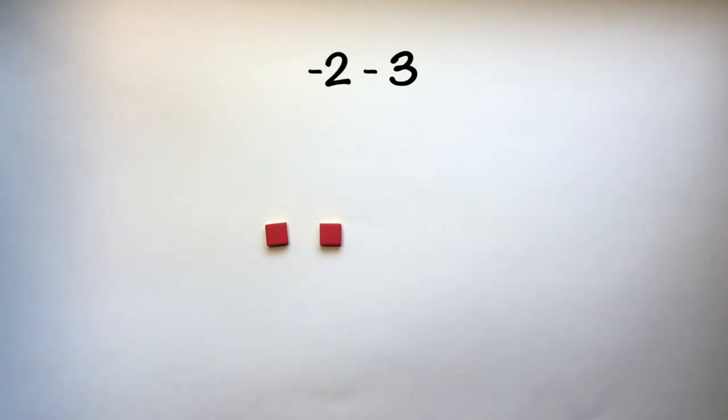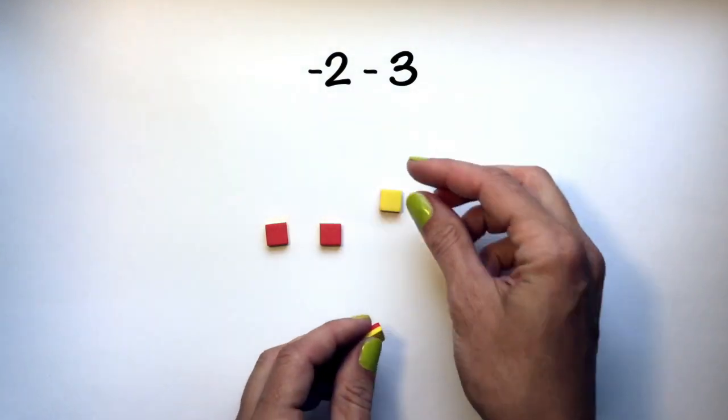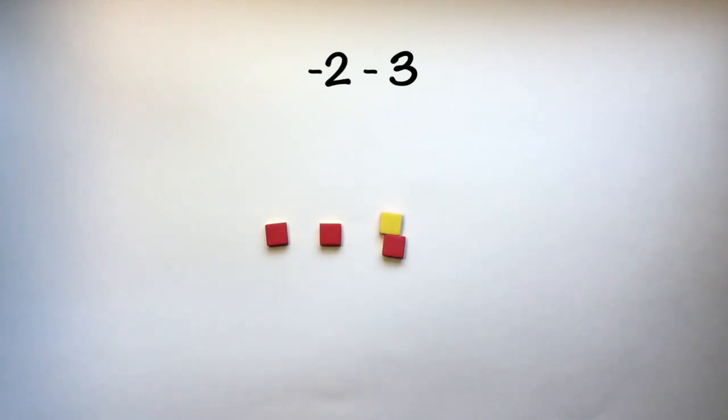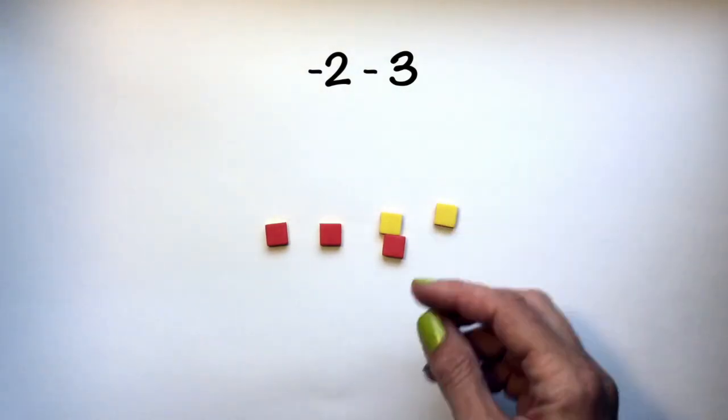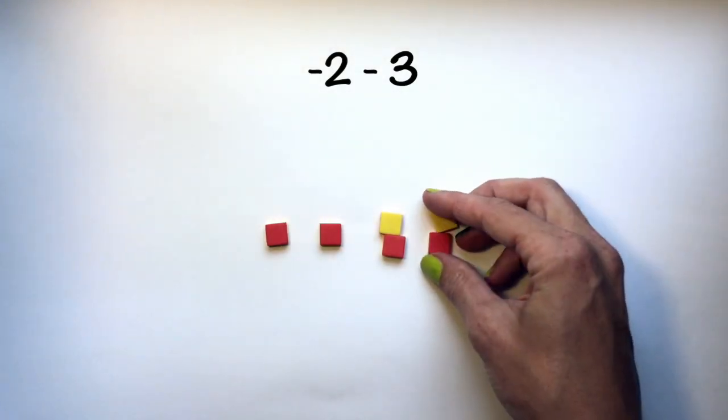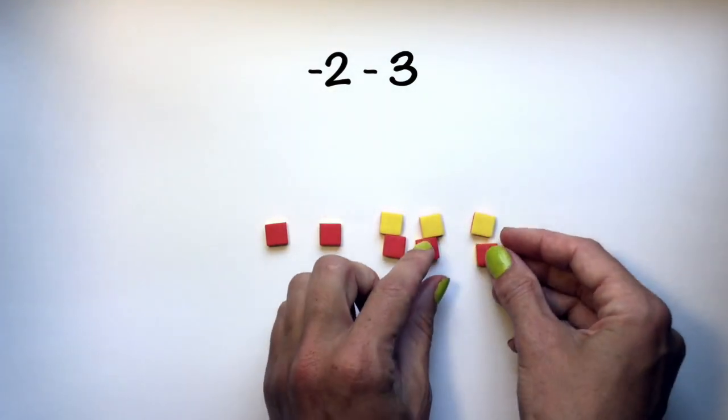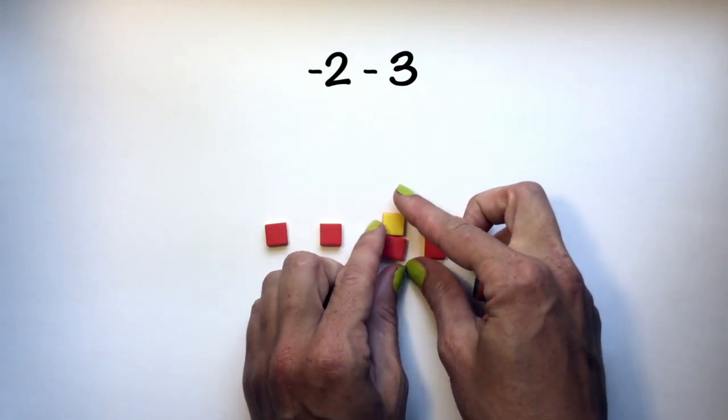So I need to add in zero pairs. So the value here is still negative 2. I just added in three zero pairs.